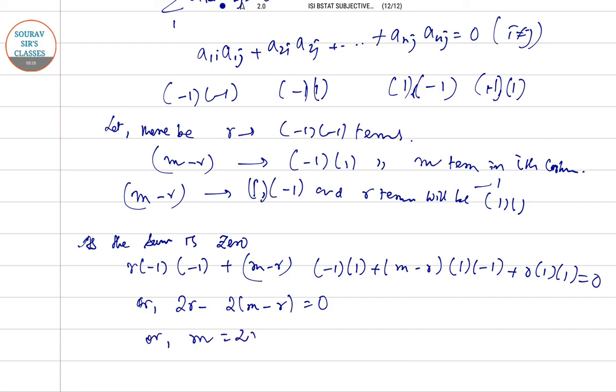Or m equal to 2r, so that is n equal to 4r. Hence we can see that n is a multiple of 4, hence it is proved.